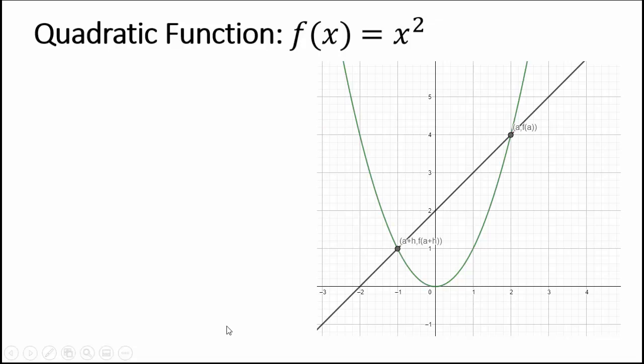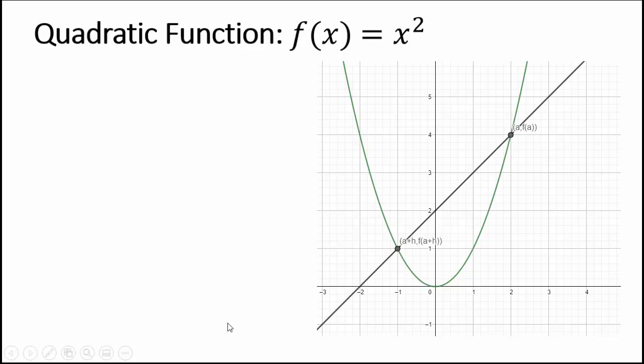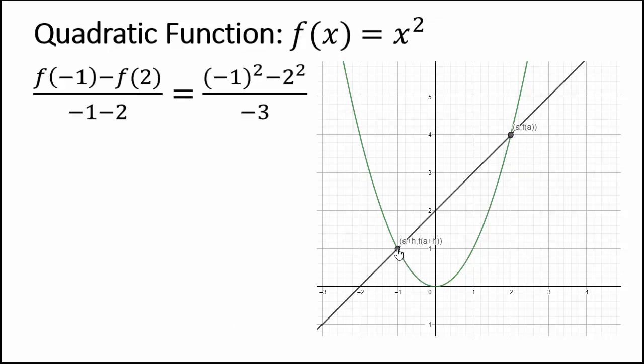What happens if you have a quadratic function? Do you see this graph here for y equals x squared? We will focus on some particular values and take a look at what difference quotient is. If you look at the points (2, 4) and (-1, 1).